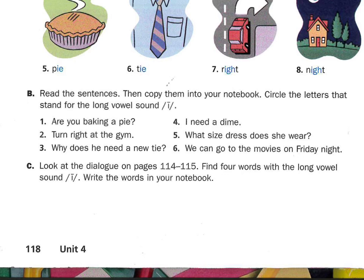Copy these sentences in your notebook. Circle the letters that stand for the long vowel sound I. Are you baking a pie? Turn right at the gym. Why does he need a new tie? I need a dime. What size dress does she wear? We can go to the movies on Friday night.